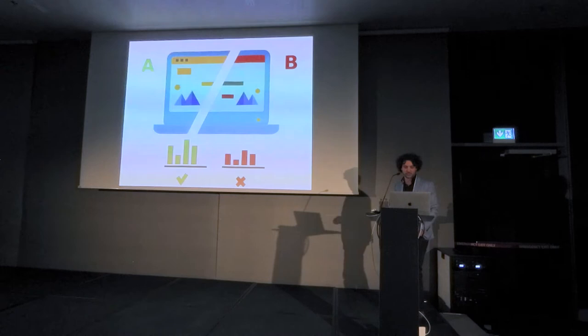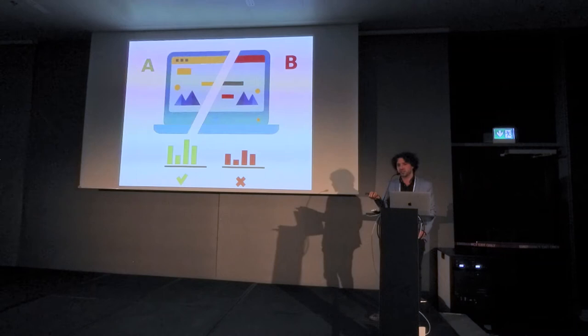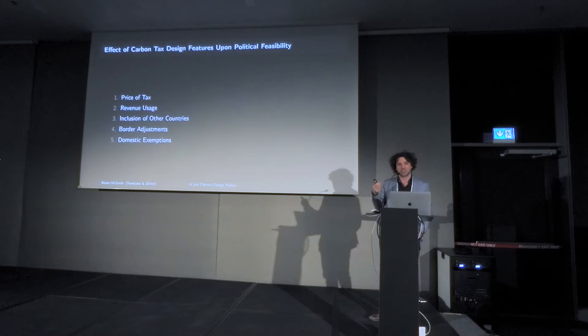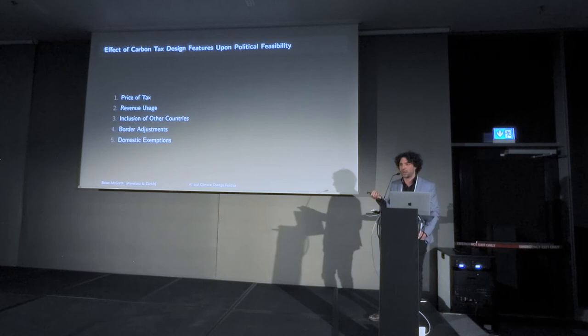To give a basic idea of what the initial research was doing, it's essentially experimental design in an A-B testing framework. We're testing multiple design options and seeing which resonate on average most with the public in the United States and in Germany. Even something as simple as carbon taxation has many design features to think about: what is the price of the tax, and how the revenue is used — which turns out to be very important politically.